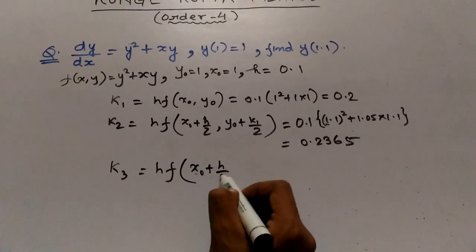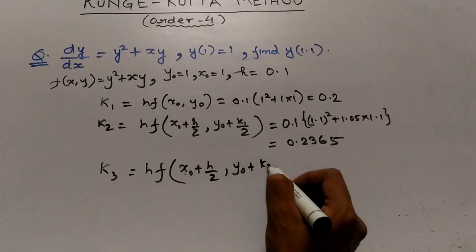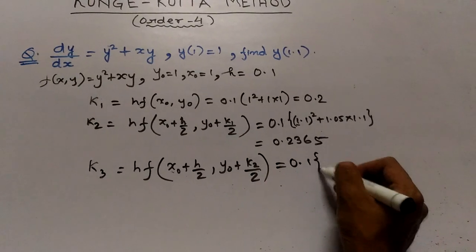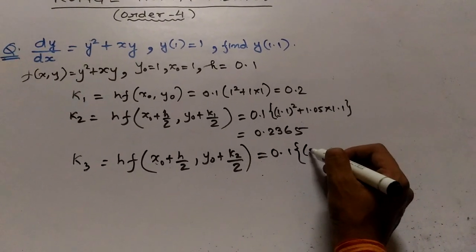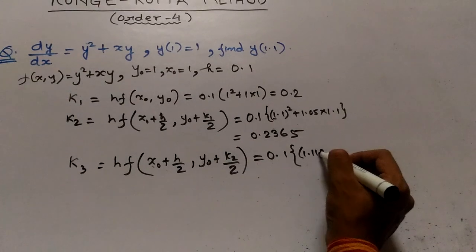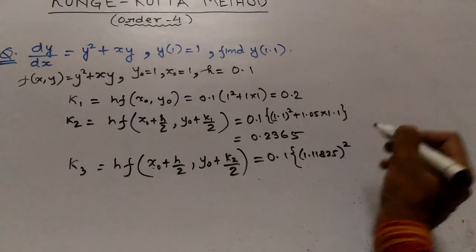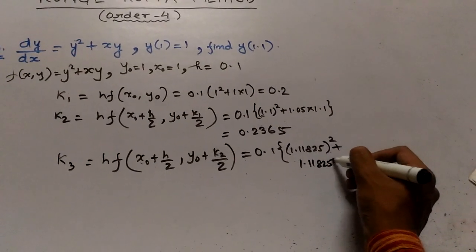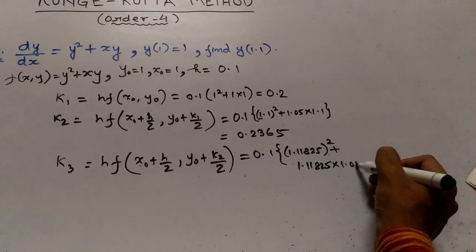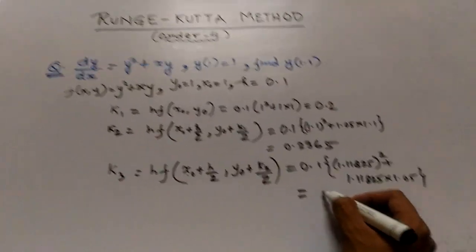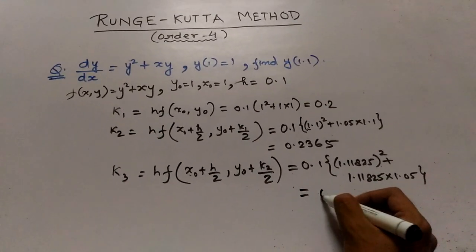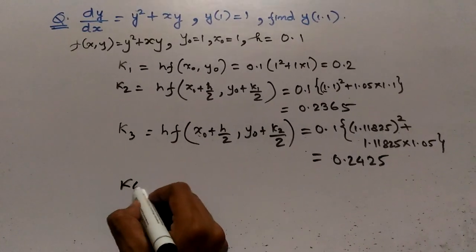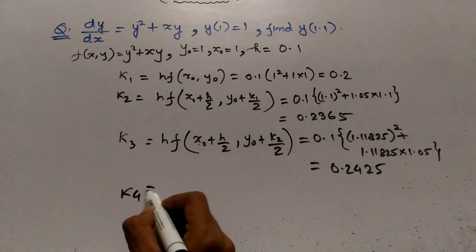The value of k3 is h into f(x_0 + h/2, y_0 + k2/2), which equals 0.1 into (1.11825² + 1.11825 × 1.05), giving k3 equals 0.2425.